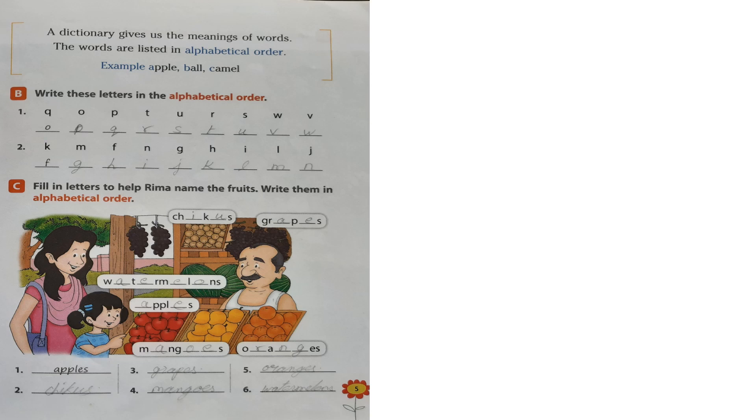Q, O, P, T, U, R, S, W, V. How will you arrange this? As we are allowed to say A, B, C, D. A, B, C, D, E, F, G, H, nothing is there. I, J, K, L, M, N, O. Yes, O is there. So write the O. Next what will come? P, Q, R, S, T, U, V, W.